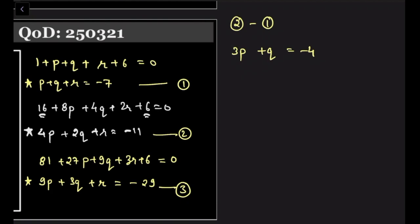So similarly, if I subtract equation 3 with 2, I will get 5P + Q = -29 + 11 = -18. If I further subtract these two equations, I will get 2P = -14.